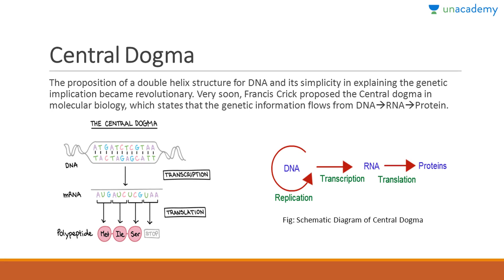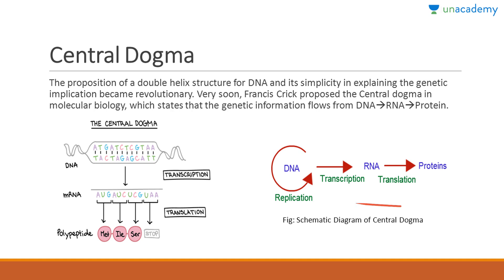The proposition of the double helix model became revolutionary. Francis Crick proposed the central dogma in molecular biology, which states that genetic information flows from DNA to RNA to protein. First, DNA replicates to increase its amount; then DNA strands are transcribed to form RNA; this RNA is further processed and translated to form polypeptide chains and finally proteins.